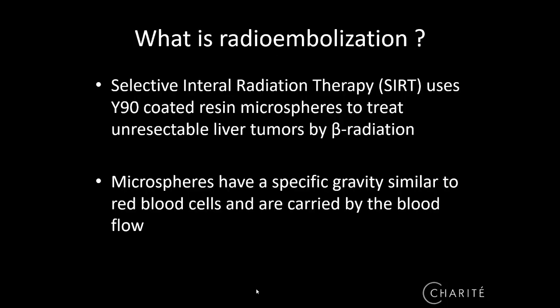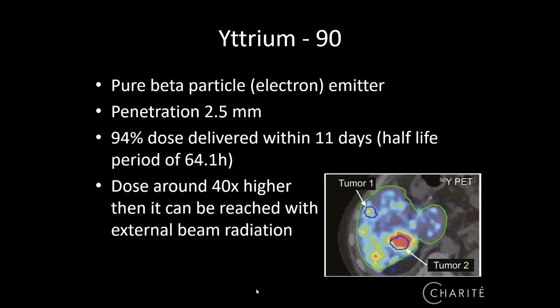What is radioembolization? It's called Selective Internal Radiation Therapy, using Yttrium-90-coated resin microspheres to treat unresectable liver tumors by beta radiation. These microspheres have a specific gravity similar to red blood cells and are carried by free blood flow into the tumors, with nearly no embolic effect.